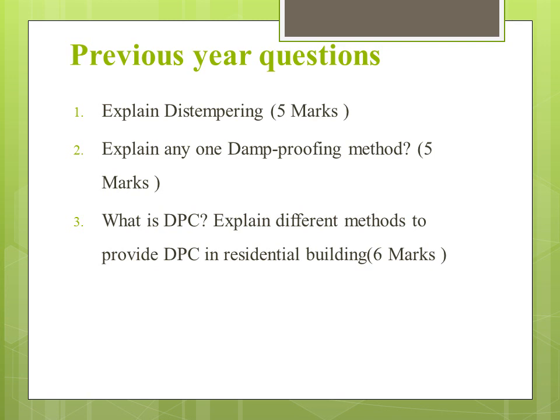The previous year questions include: explain distempering; explain any one damp proofing method; what is DPC; and explain different methods to provide DPC in a residential building. By the end of this session you should be familiar with white washing, color washing, distempering and the various materials used for distempering, damp proofing, the materials used for damp proofing, and the stages involved in termite proofing. You should answer previous year questions properly to get the required marks.